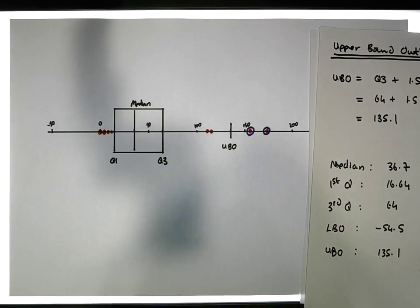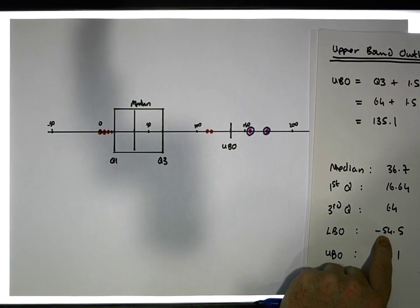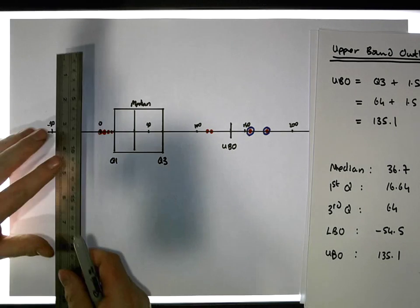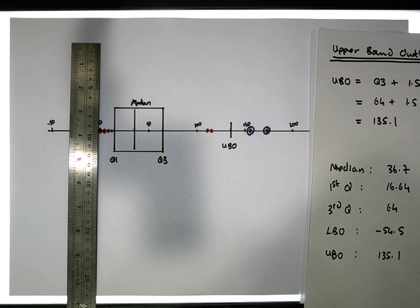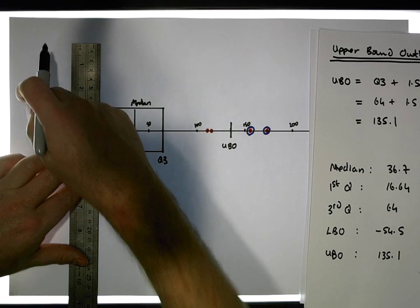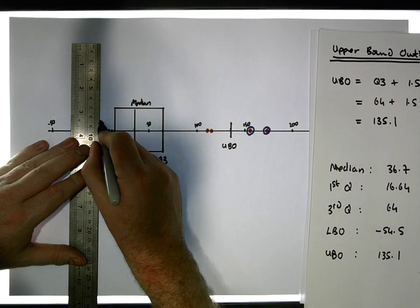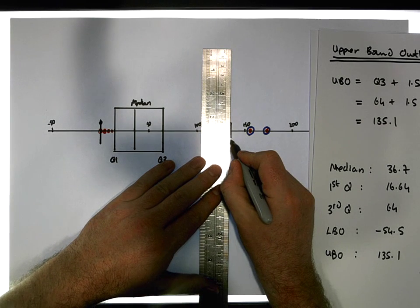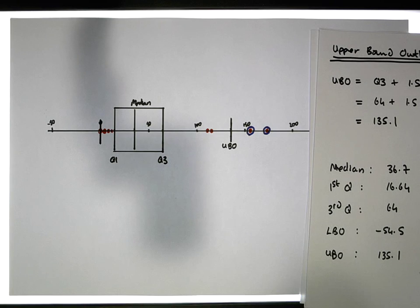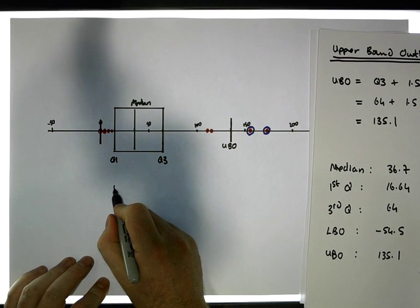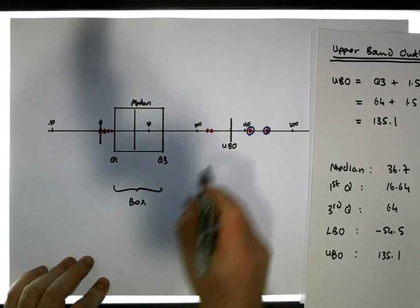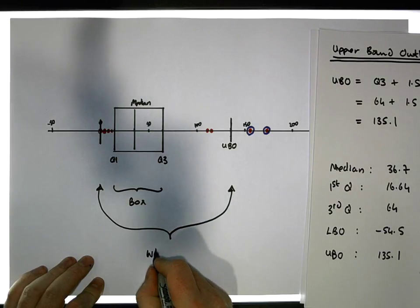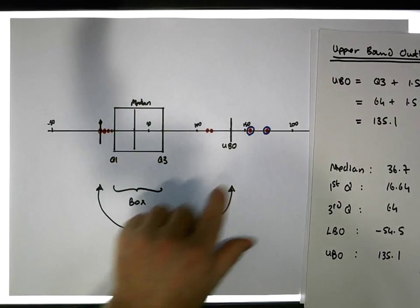There are no values in our data set less than minus 54 — the smallest value is zero. So in this case, we put the whisker line at the smallest value rather than going down to minus 54. That line goes down to zero, giving us the lower whisker of the plot.